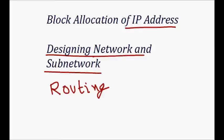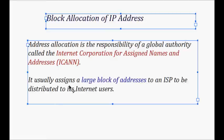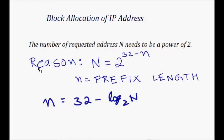Who assigns the block of addresses or IP addresses? It's ICANN — Internet Corporation of Assigned Names and Addresses. What it does is allocate a large block of IP addresses to an ISP, to be distributed to internet users.